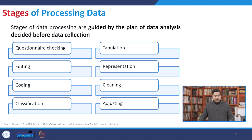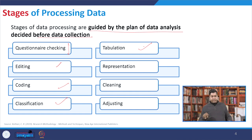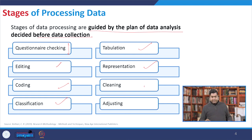The common stages of processing data are guided by the plan of data analysis, which is normally decided before data collection. The stages start with questionnaire checking, then editing, coding of data, classification of data, tabulation of the required information in a particular format, representation of data — which is very important to help the reader and researcher interpret — then cleaning of data, and adjusting if required.